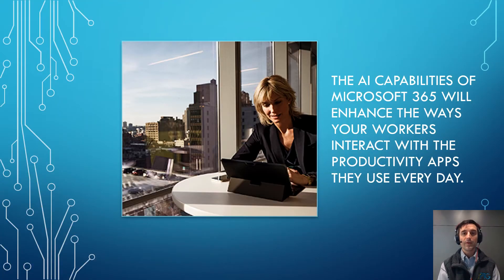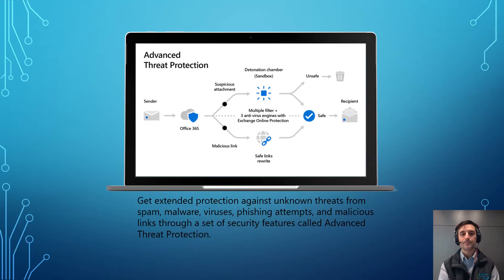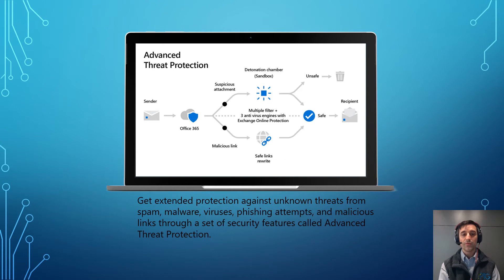Microsoft 365 does have AI capabilities that will enable your workers to interact with the productivity apps they use every day. One of the features we use all the time and really suggest to a lot of our clients is advanced threat protection — you get extended protection against unknown threats from spam, malware, viruses, phishing attempts, and malicious links through a set of security features.